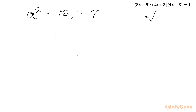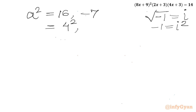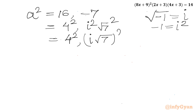Now we know that √(−1) = i, so −1 = i². I can write 16 as 4², and −7 as i² times (√7)², which gives i√7 whole squared. Taking the square root of both sides, a equals ±4 or ±i√7.